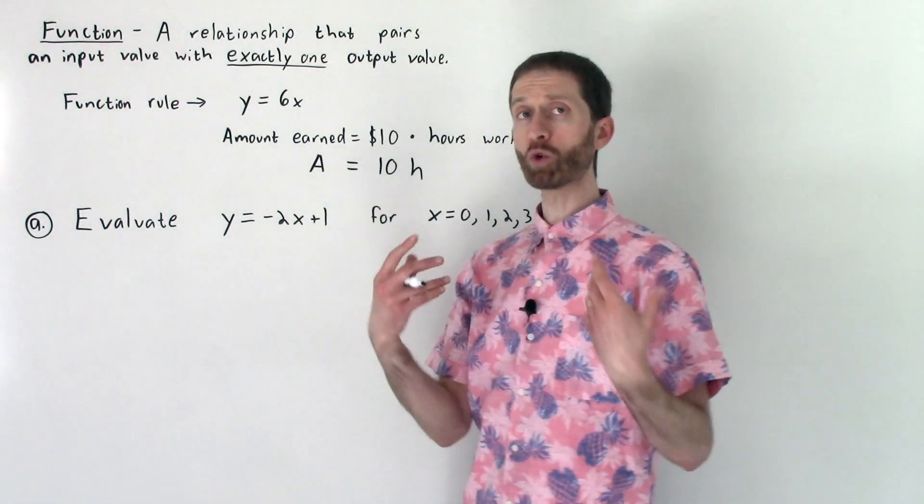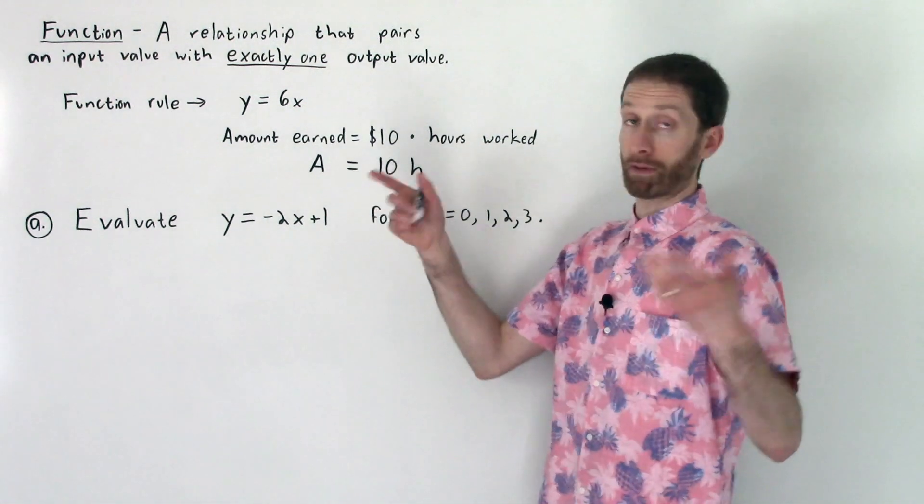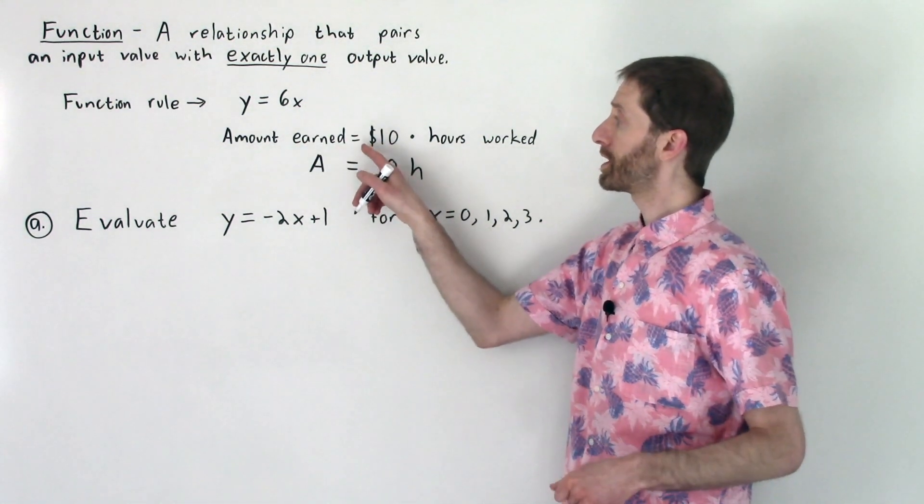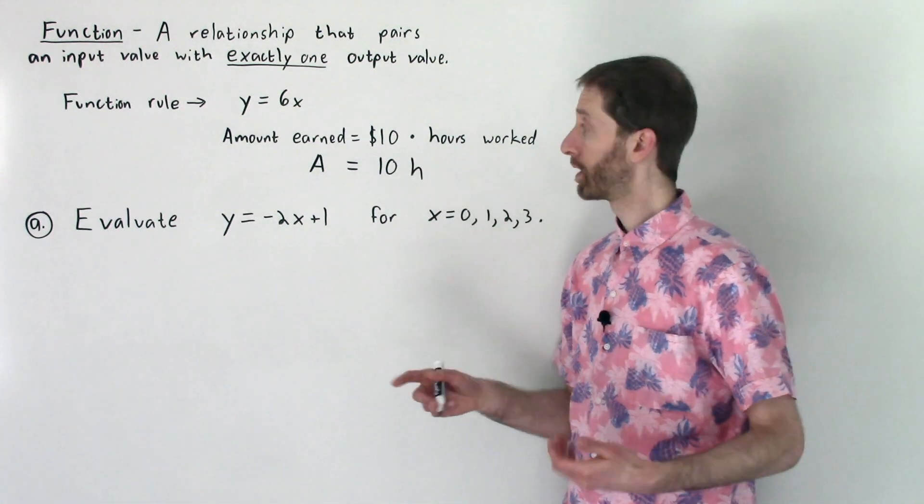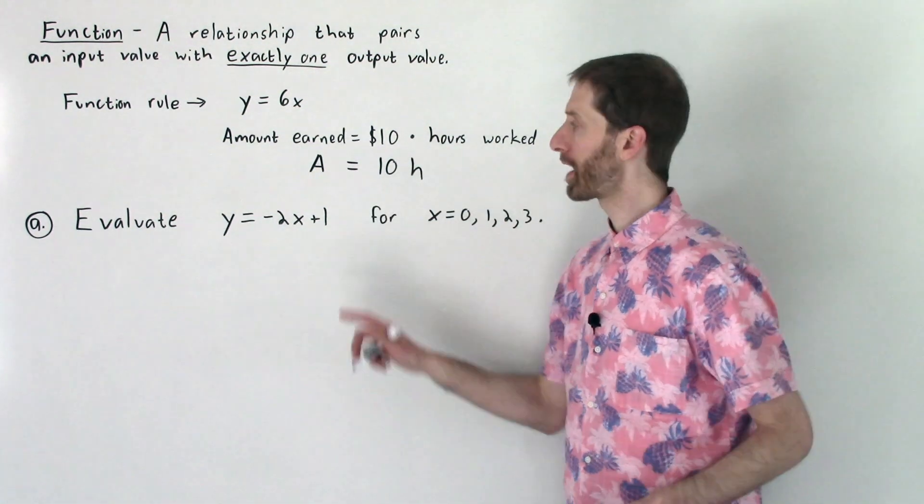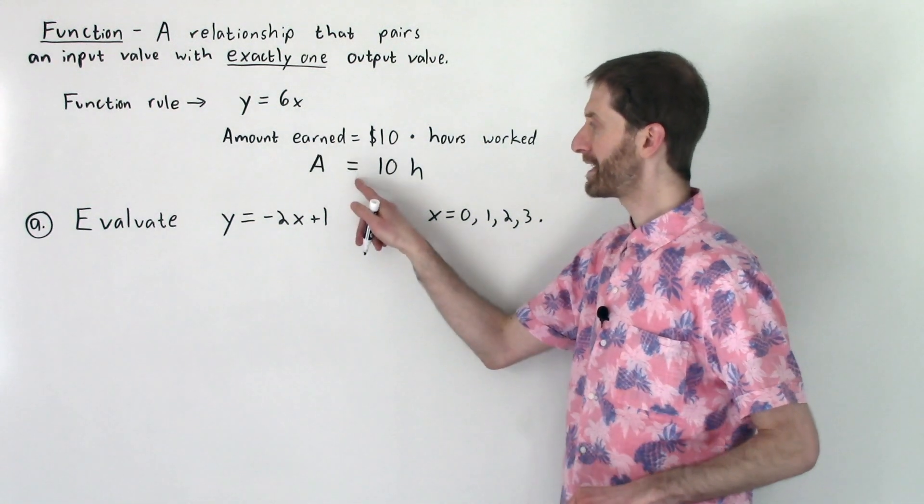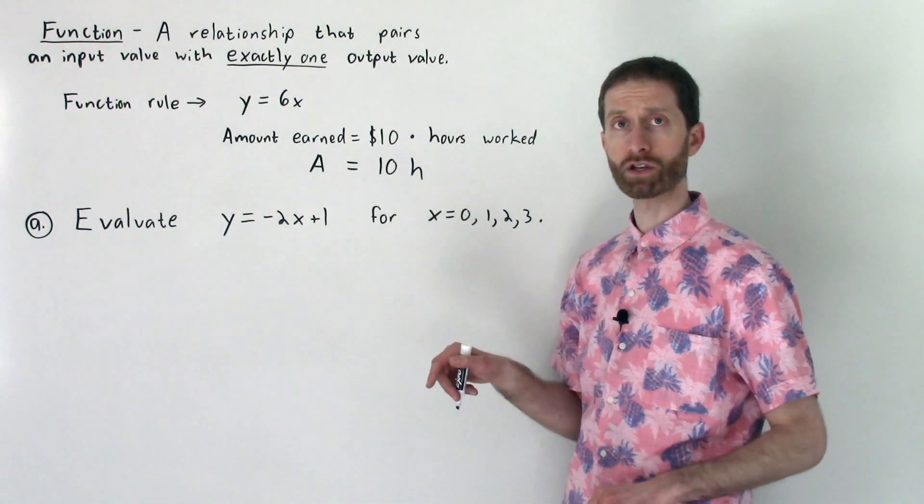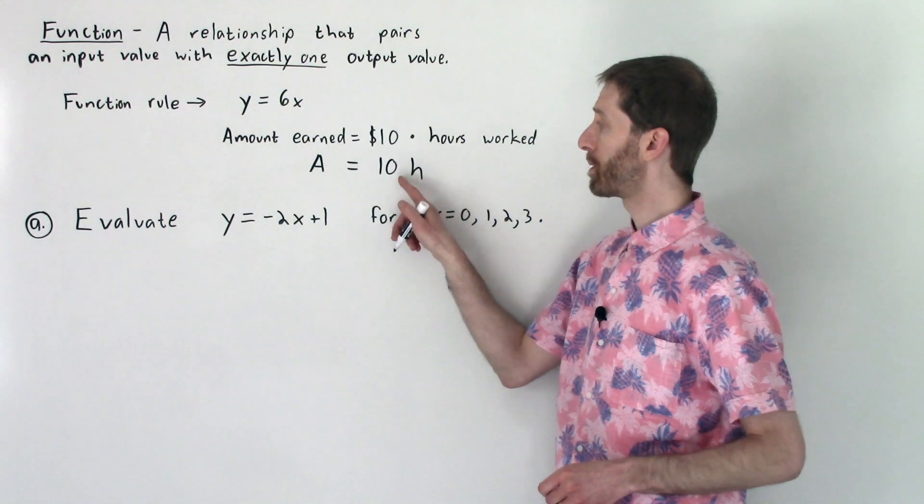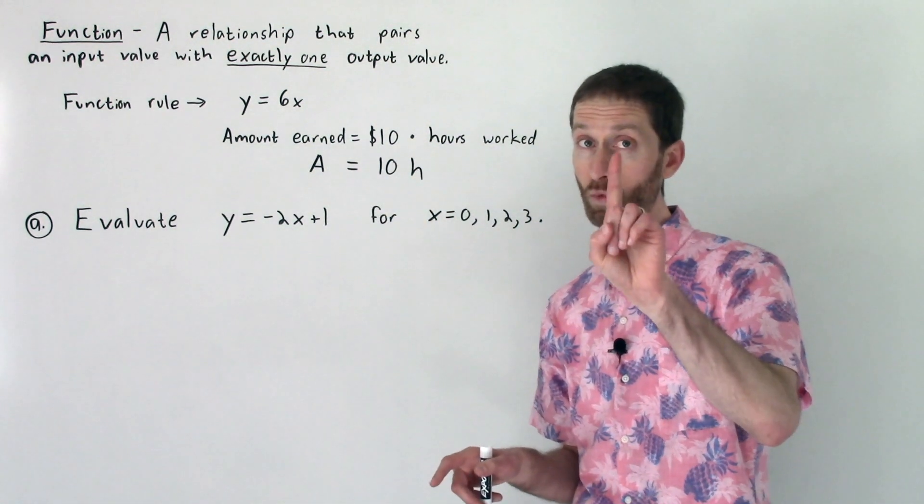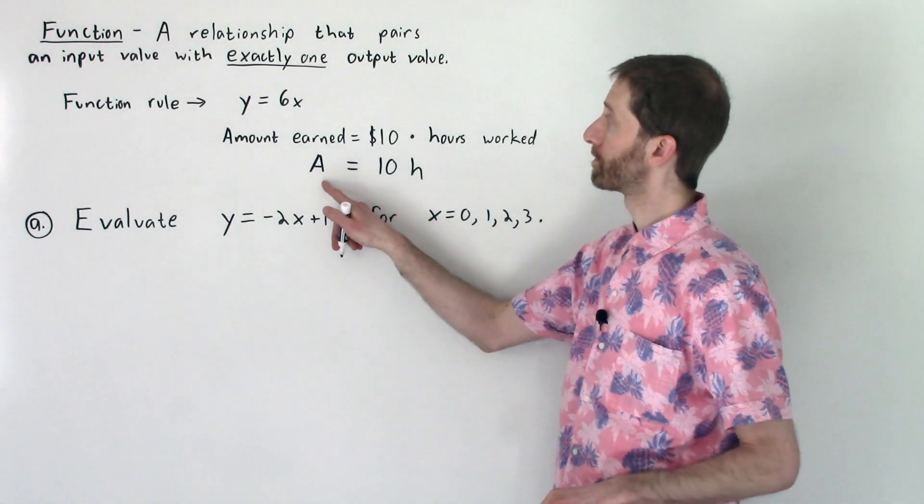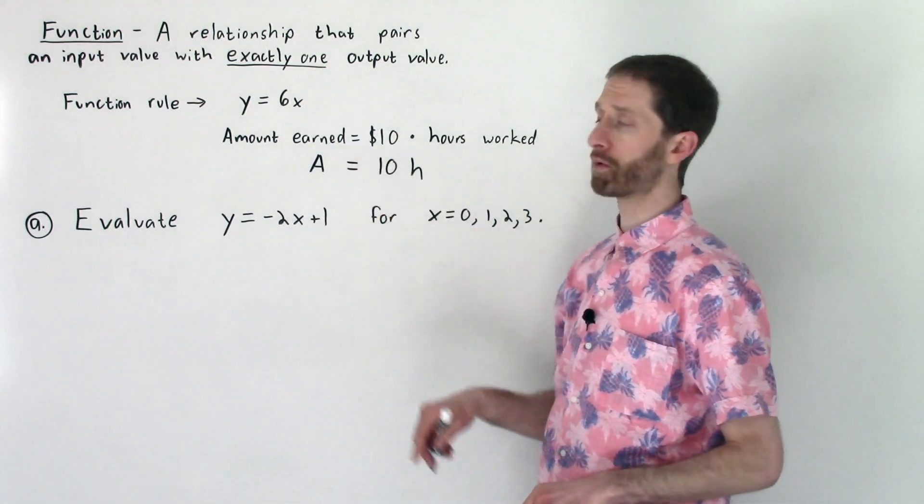Another more real world scenario would be having a job. The amount that you earn or the amount earned is equal to, let's say, $10 times the number of hours worked. As abbreviated algebra, that would be A for the amount earned equals 10 times h. Again, for every hour amount we put in, we will get out a different, but only exactly one, amount, output value. That makes both of these functions.